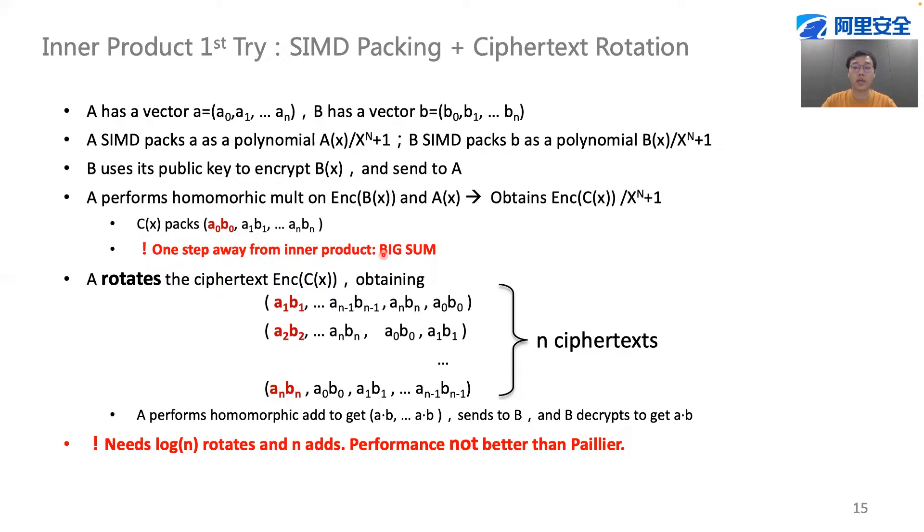So we have to aggregate element-wise result, which requires rotating the vector multiple times. This is a very expensive operation. Most previous works used this method to implement inner product.